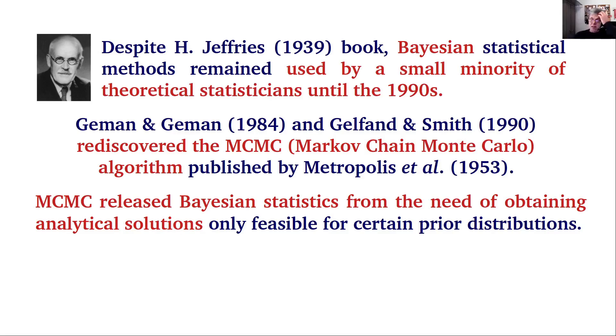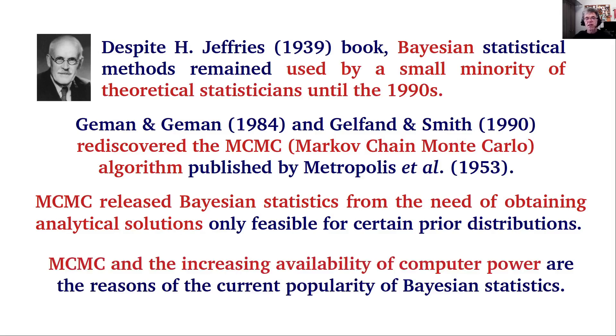What changed in the 1990s was the rediscovery of the MCMC, the Markov Chain Monte Carlo algorithm, that was published by Metropolis et al. in 1953 in the Journal of Physical Chemistry. This algorithm released Bayesian statistics from the tyranny of needing analytical solutions that were only feasible for certain prior distributions and problems. MCMC, this algorithm and its many variants, and increasing availability of computer power are the reasons for the current popularity of Bayesian statistics across the world, popularity that has increased over the last 30 years and can be forecasted to increase in the coming future.